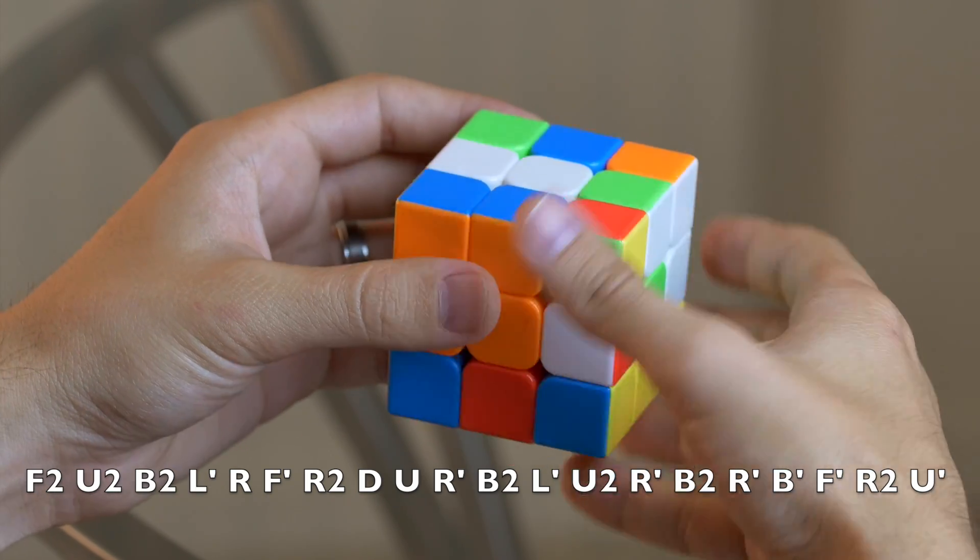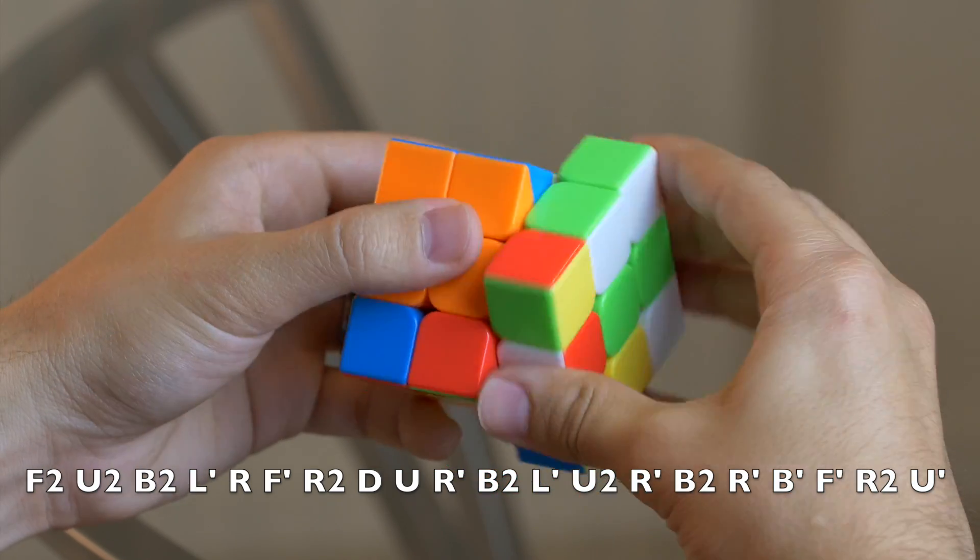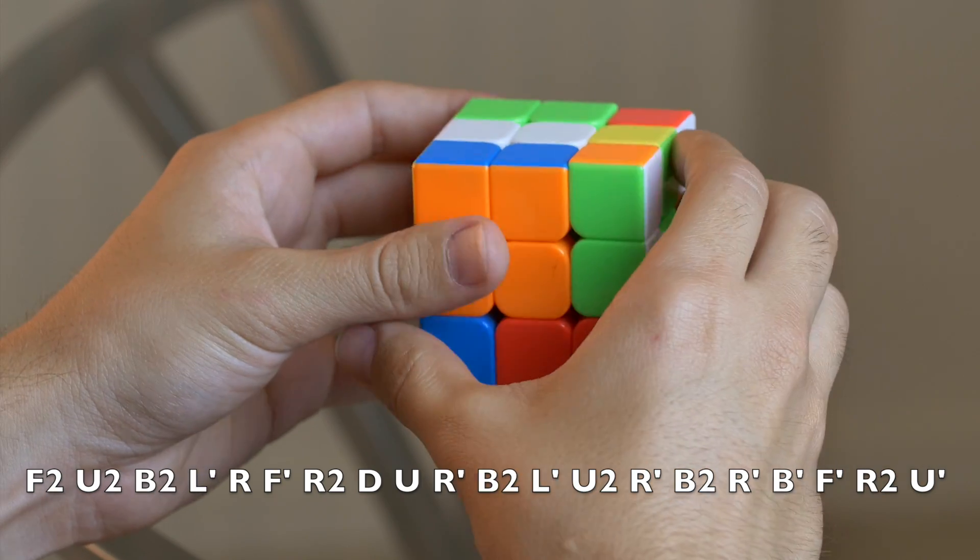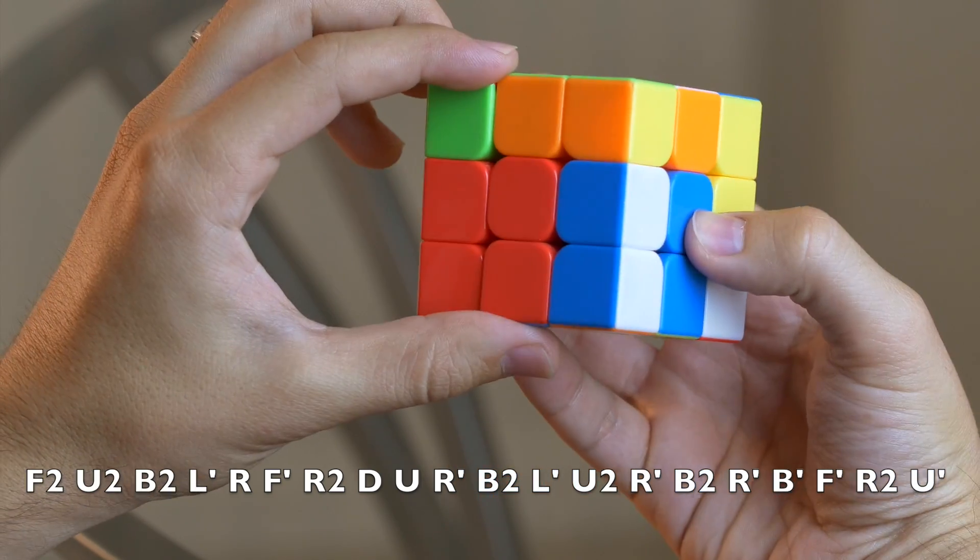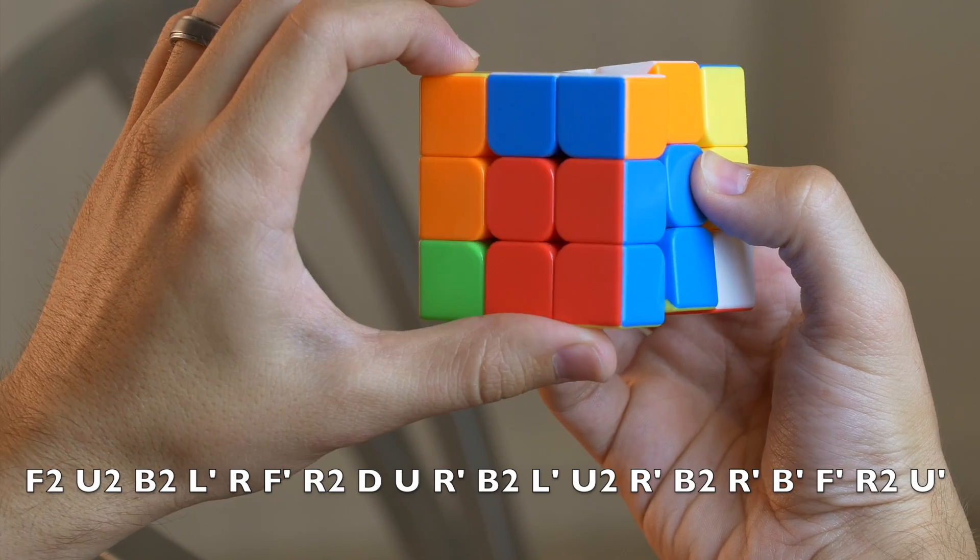Back two times, right prime, back prime. And just to make sure that we're doing back prime correct, as if you were looking at it, back prime would be counterclockwise, so it looks like that.